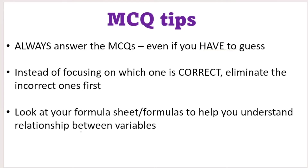My third tip is to look at your formula sheets or formulas to help you understand the relationship between variables. Often multiple choice questions are tricky and they ask you to understand the relationship between variables in a formula. For example, considering Boyle's gas law or PV equals nRT, they could say: if I keep moles and temperature constant and I decrease the volume, what will happen to the pressure? Understanding your formulae will help you interpret the multiple choice question.